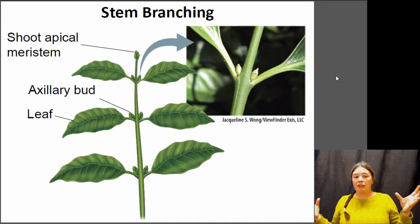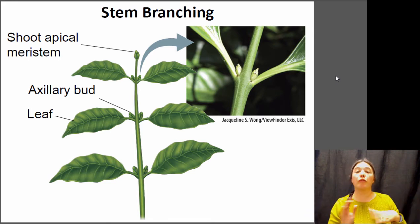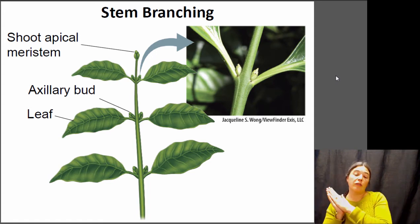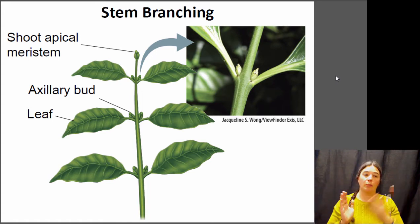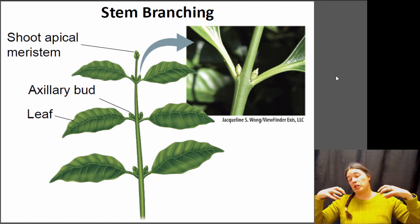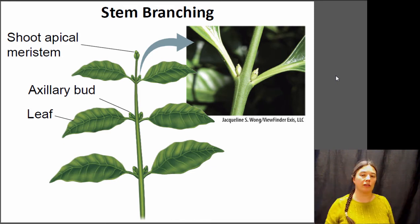The axillary buds can provide a place for branches to form. Axillary buds are the source of leaves and also the source of new branches that go off to the sides of the plant. You've got your apical meristem at the top, your axillary buds off to the sides, and cell division can happen within the axillary buds, although sometimes they're relatively dormant.